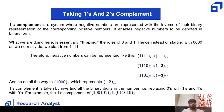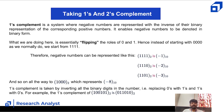One's complement is a system where negative numbers are represented with the inverse of the binary representation of the corresponding positive numbers. It enables negative numbers to be denoted in binary form by flipping the roles of zeros and ones. So instead of starting from 0000, you start from 1111. Therefore negative numbers are represented as: 1111 = -1, 1110 = -2, 1101 = -3, and so on down to 1000 = -8.